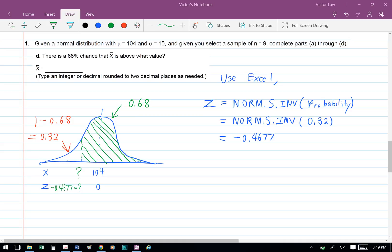To find the z value from a probability, we're going to use Excel to help us do that. We're going to use the formula NORM.S.INV. For probability, we're going to put 0.32 in there, and we're going to get a value of z equals negative 0.4677.